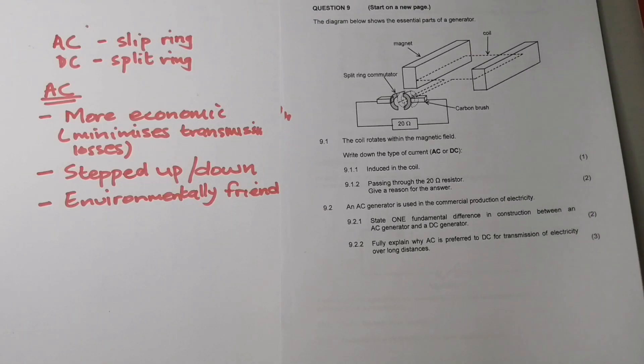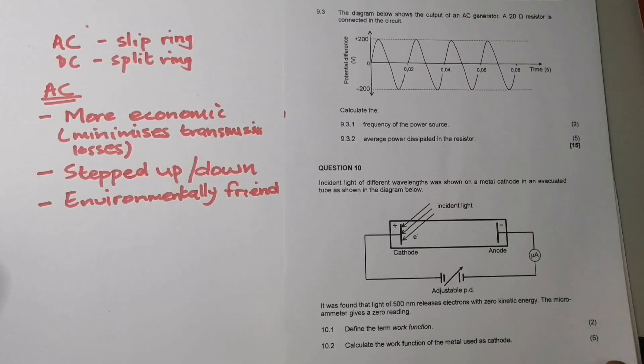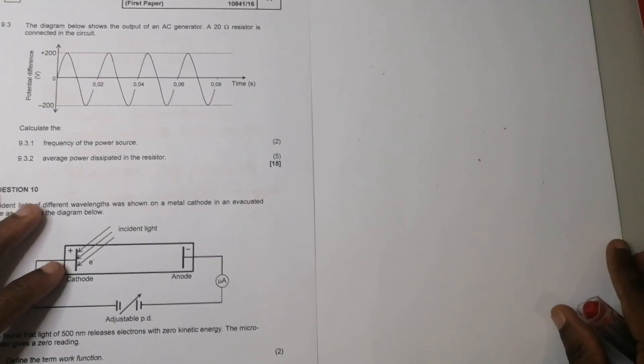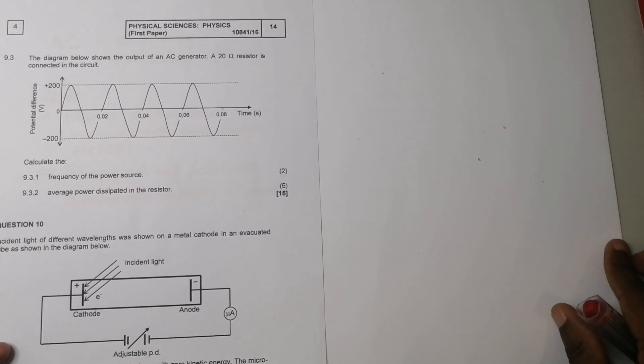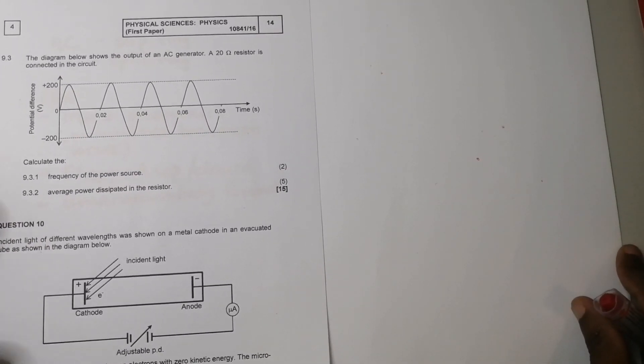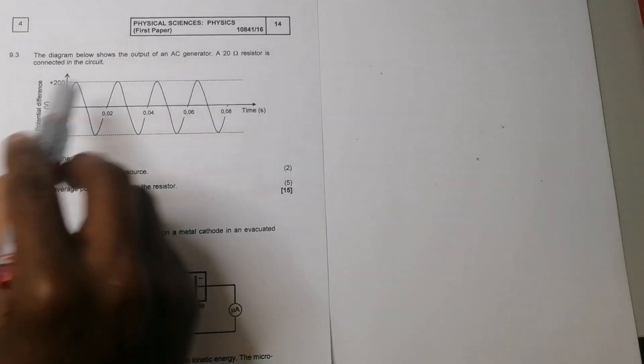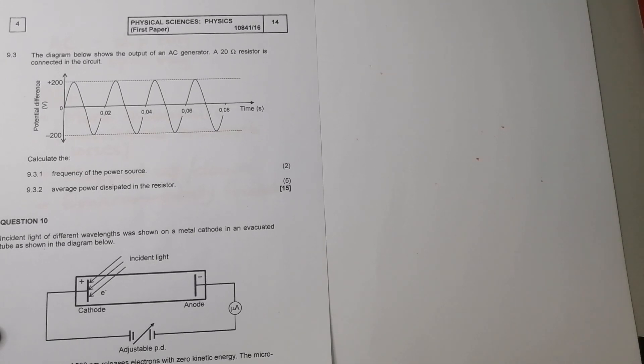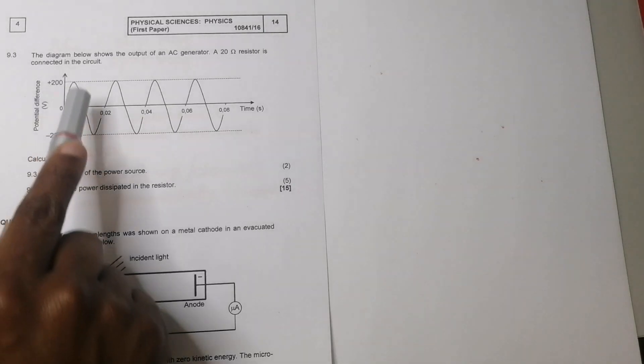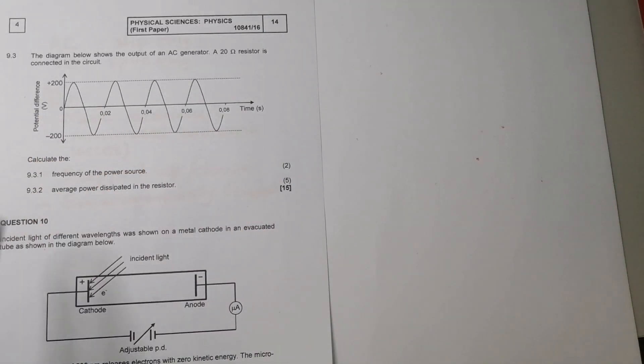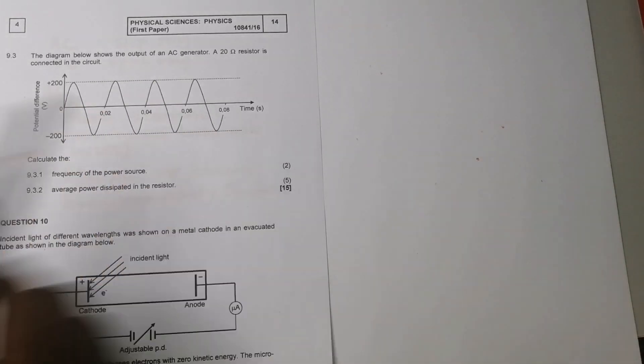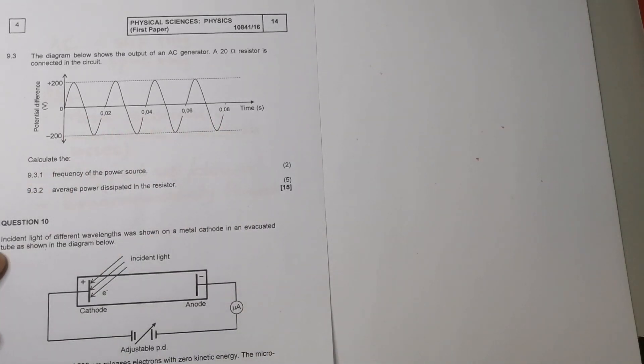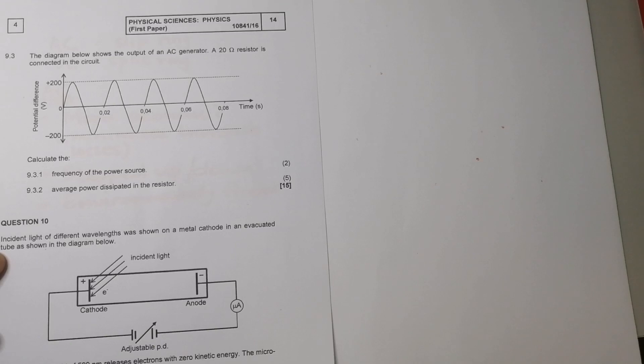Now, quickly, let's go through the next question. So that has to do with the calculations that have to do with this section. So I'm going to put this aside. In this case, they say the diagram below shows the output of a generator. A 20 ohm resistor is connected to the circuit. Now, the first thing that I know, what type of a generator would that be? It would be an AC generator. And they've given me the time there.